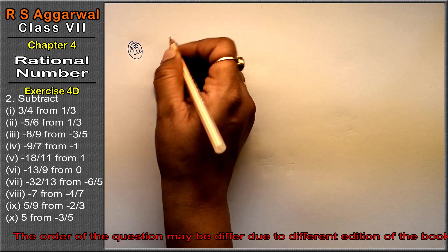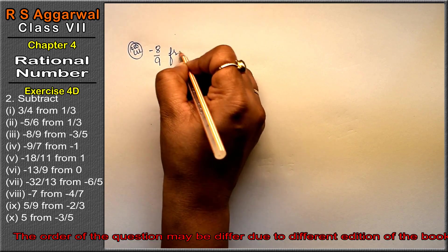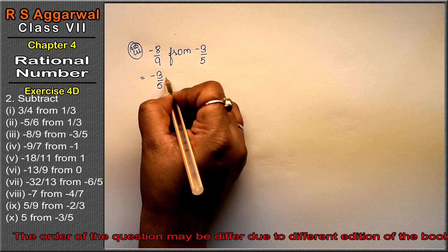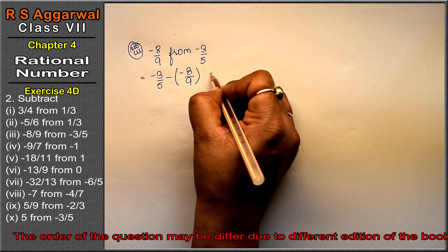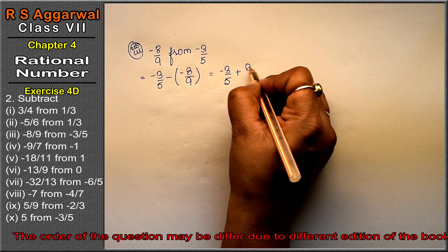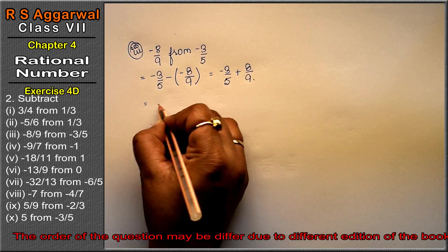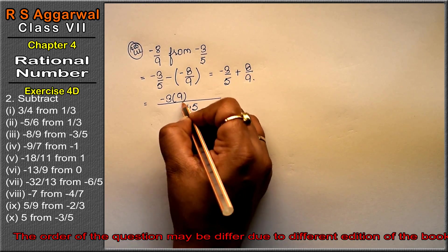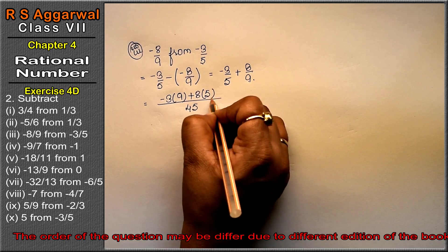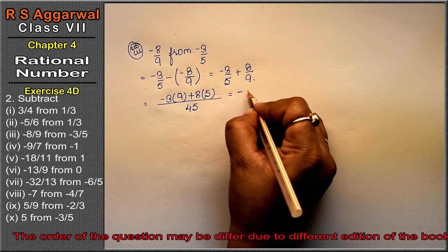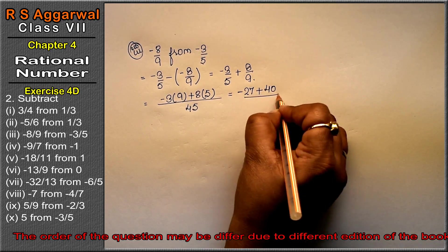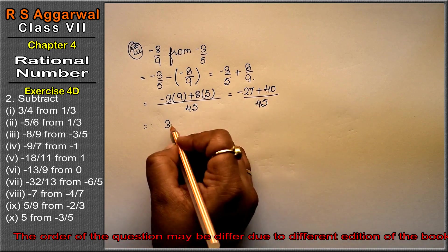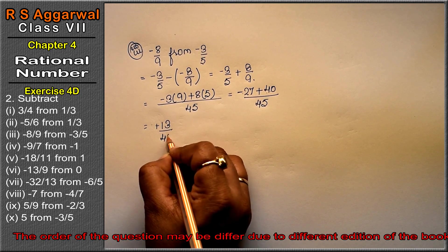Third part: subtract minus 8 upon 9 from minus 3 upon 5. So minus 3 upon 5 minus minus 8 upon 9. Opening bracket: minus 3 upon 5 minus minus is plus 8 upon 9. Both are unique numbers, so multiply them: 45. Minus 3 multiplied by 9 is minus 27, plus 8 multiplied by 5 is 40, upon 45. Opposite signs, so subtract: 40 minus 27 is 13. Sign of the bigger one, so 13 upon 45 is the answer.